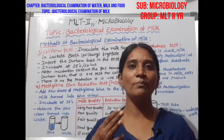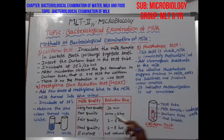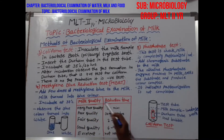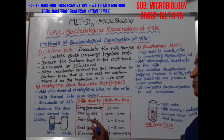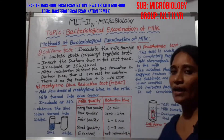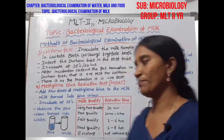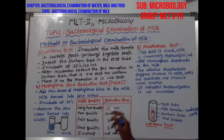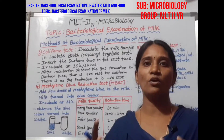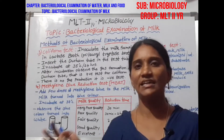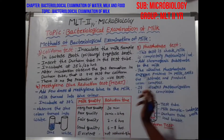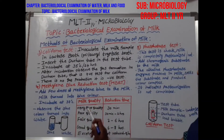Based on the time taken for the color change, we can determine milk quality. If the color changes within 30 minutes, the microbial count is very high, indicating very poor quality milk. If the color changes between 30 minutes and 2 hours, it indicates poor quality milk.